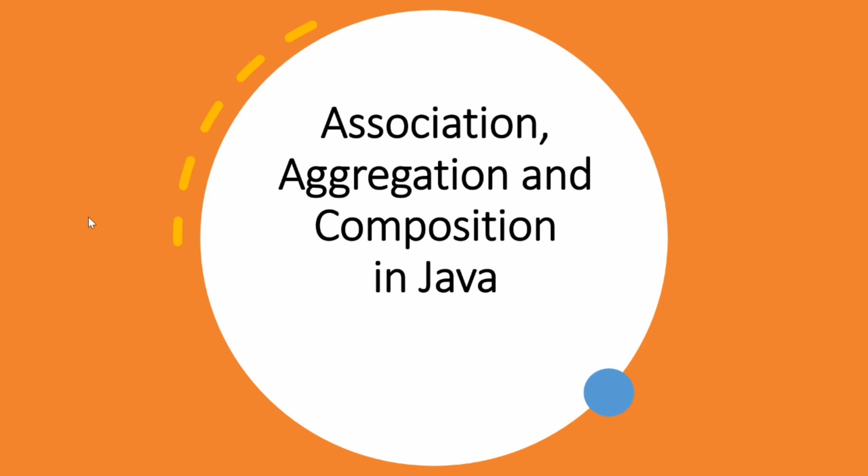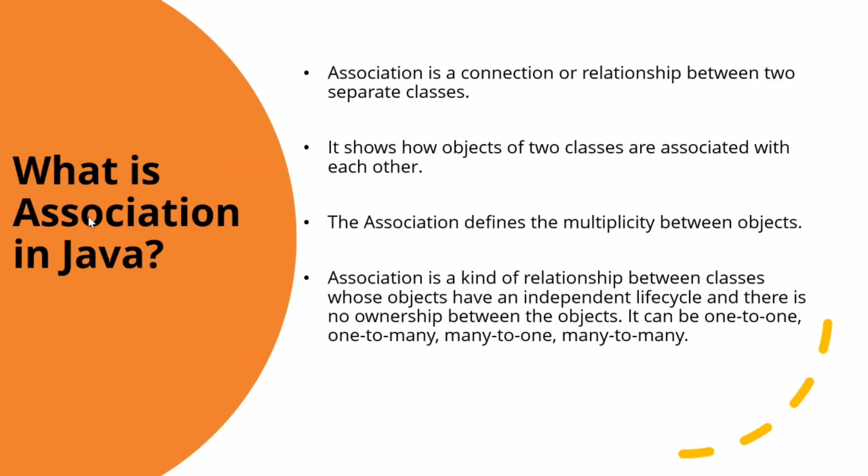Before starting, let's think about what happens if there are two classes that have some kind of relationship between them. For example, the classes could be Library and Books, or Teacher and Students. Don't you think these two classes may be associated or connected with each other? We can establish a relationship between them using Java Association.